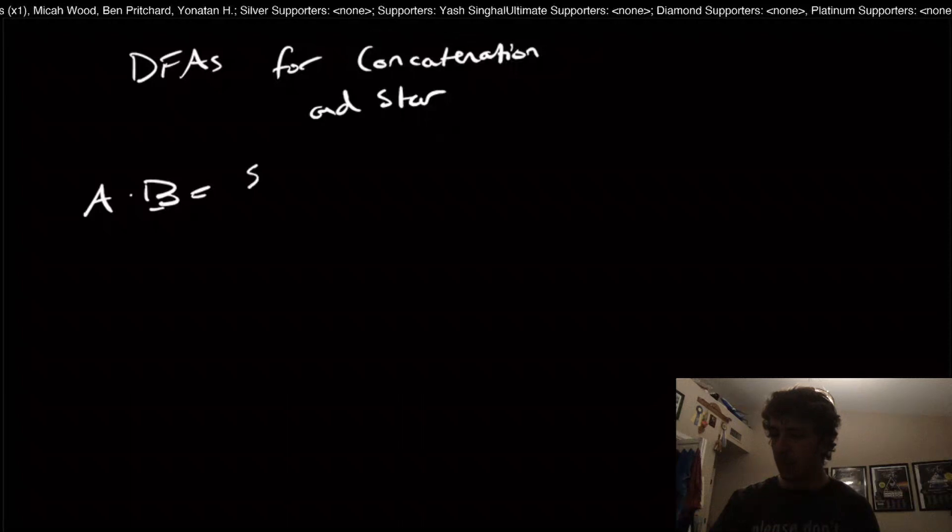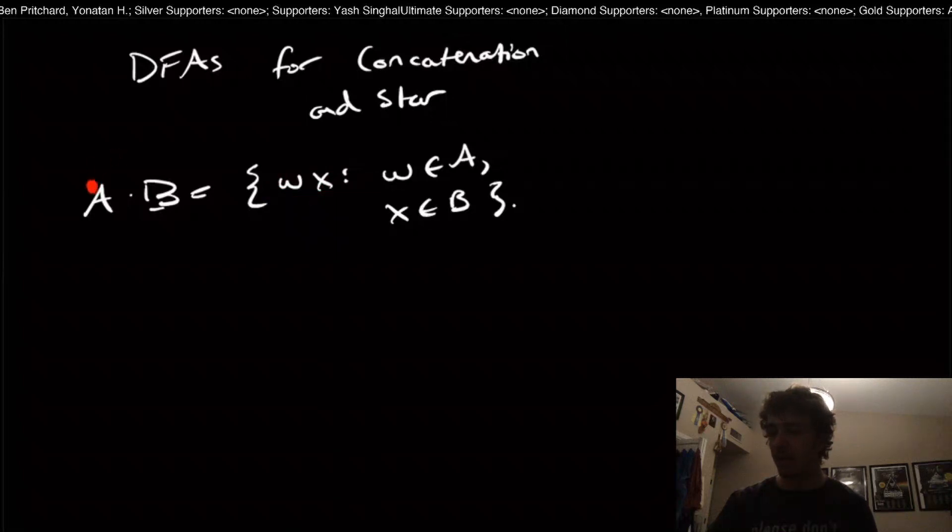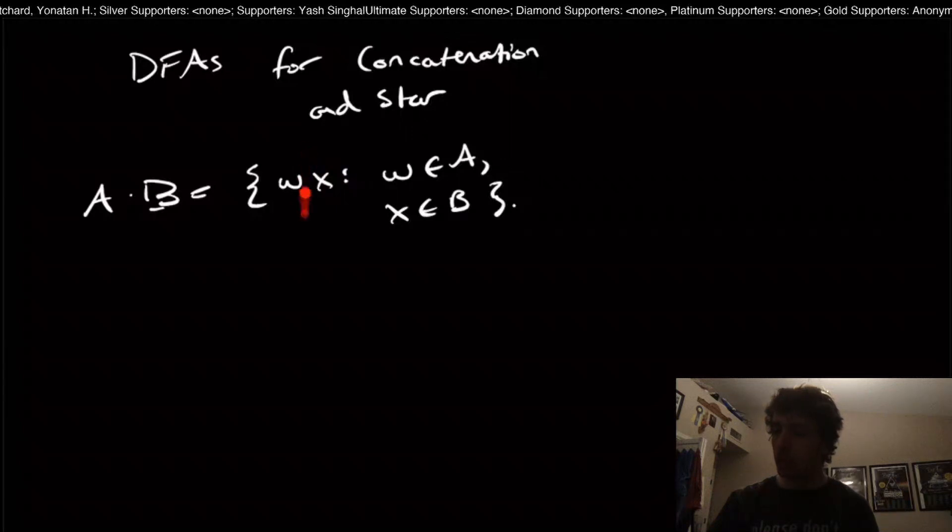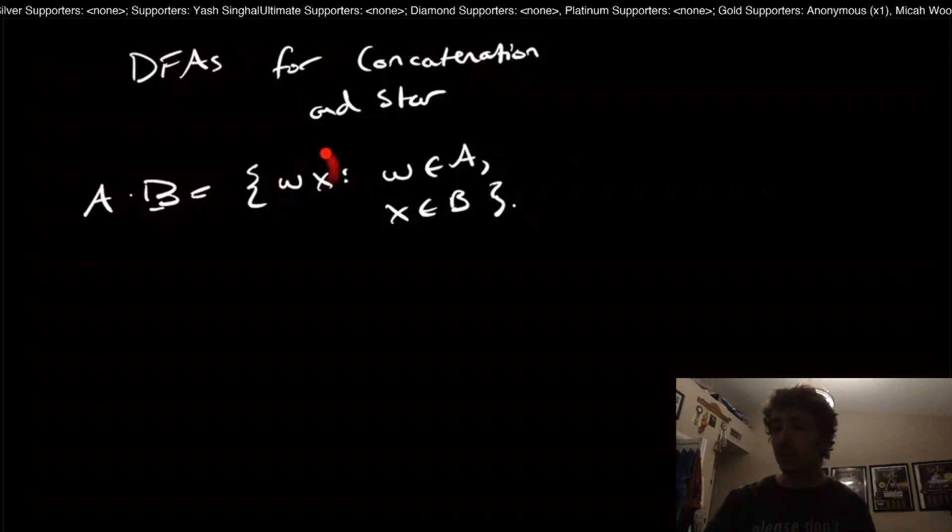The problem that we had with DFAs and trying to get this, where we had a DFA for A and a DFA for B, was that there's no split point in between these two strings. Because the DFA can't instantaneously jump from a state to another state without reading a character, then it seems quite difficult for a DFA to be able to do this.